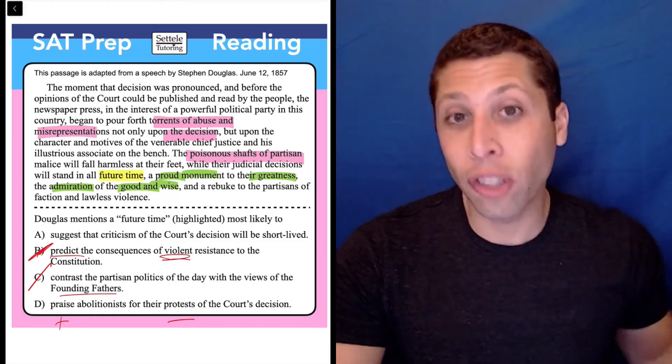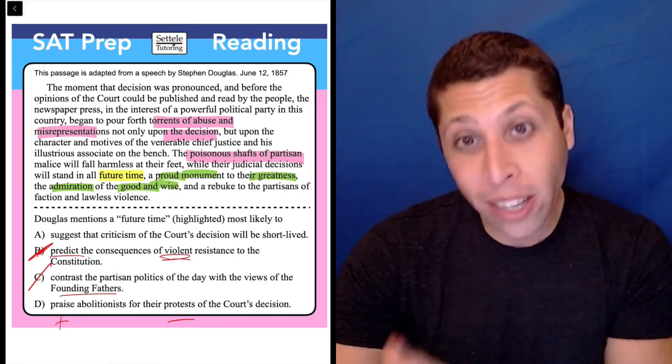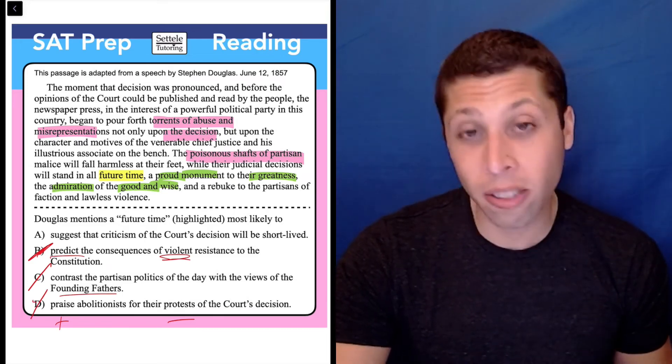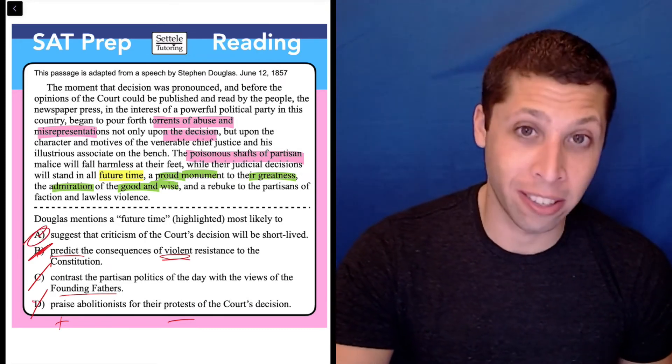He's praising the decision itself, and he's criticizing the protesters, criticizing the people who have a problem with the decision. So this is the wrong order of the connotation. And that leaves us with A, which is the answer.